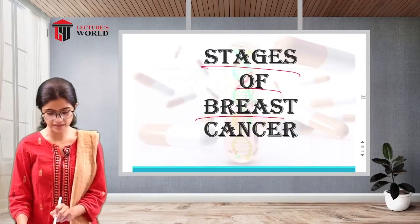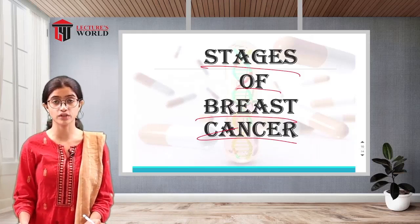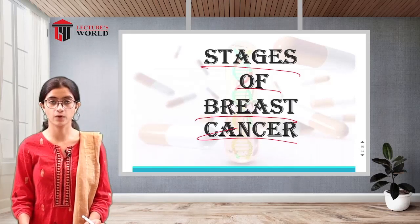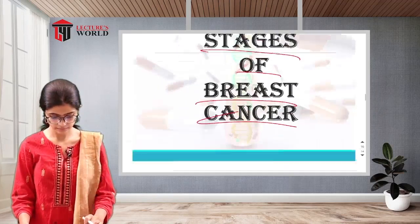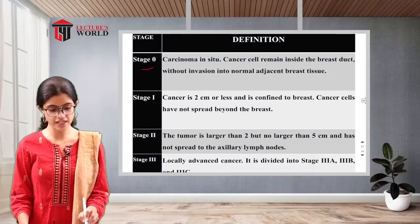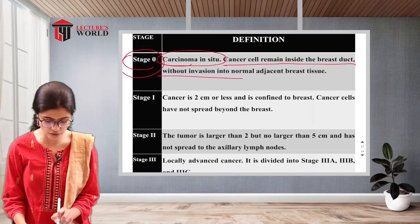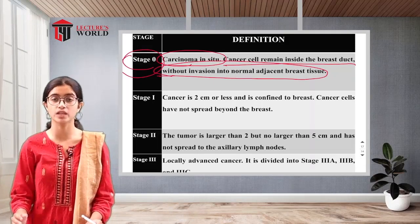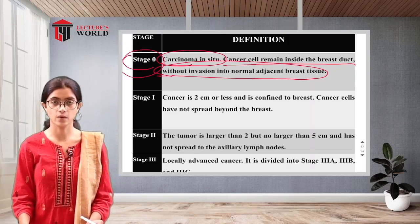Now the stages of breast cancer. When the patient is being treated, the stage of the cancer is first assessed based on the site and size of the tumor to identify the appropriate treatment. Stage 0 is carcinoma in situ — cancer cells remain inside the breast duct without invasion into adjacent breast tissue, staying in their original place and not spreading.